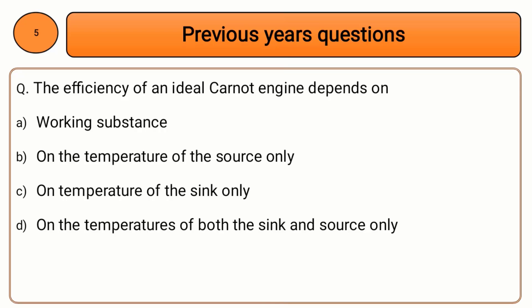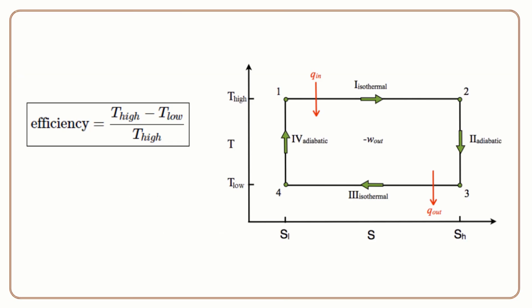Next question: the efficiency of an ideal Carnot engine depends on — option A: working substance, option B: temperature of source only, option C: temperature of sink only, option D: temperature of both sink and source. The Carnot cycle consists of two isothermal processes and two adiabatic processes. The Carnot engine efficiency equation is (T_high minus T_low) divided by T_high, which depends only on the source temperature and sink temperature. The answer is option D.